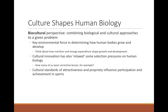Cultures also relax some selection pressures on human biology. Many of us rely on assistive visual devices — glasses and contacts — to achieve visual acuity. If we were living as hunter-gatherers with poor eyesight, we would not be successful. We would either be culled from the group or not chosen as mates, particularly males, who would be very unsuccessful as hunters if they couldn't see the animals they needed to track.